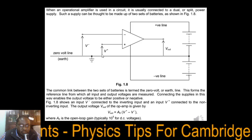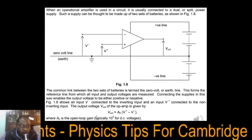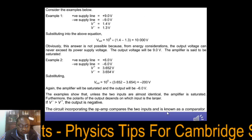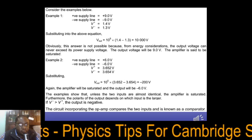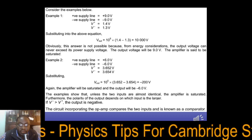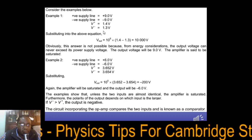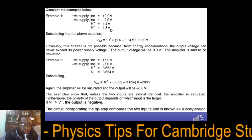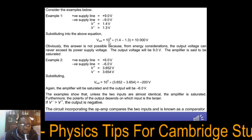After measuring those voltages, we compare them and multiply by the open loop gain to get V_out. The open loop gain is typically 10⁵ for DC voltages, which is 100,000. Consider this example: if you have a positive supply line voltage of +9 V and a negative of −9 V, with V+ = 1.4 V and V− = 1.3 V, our formula says V_out = A₀(V+ − V−), so that's 1.4 − 1.3, multiplied by the open loop gain of 10⁵.